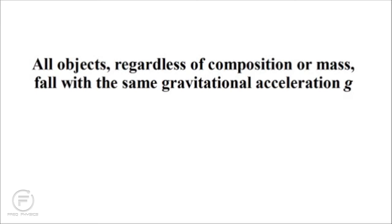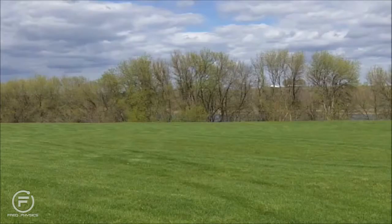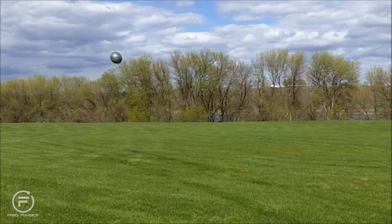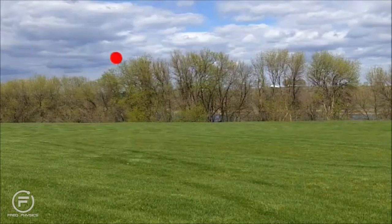As Galileo pointed out, to the extent that air resistance can be neglected, this gravitational acceleration has a very curious property: all objects, regardless of composition or mass, fall with the same gravitational acceleration g. Einstein started thinking about the deeper meaning of this fact — in particular, what are the implications for distinguishing between different frames of reference? It's a lovely spring day, so naturally I'm moved to hurl a ball of lead through the air. Here we plot the ball's position at one-sixtieth second intervals and see it follows a curved trajectory, characteristic of accelerated motion.